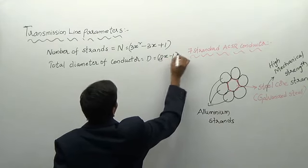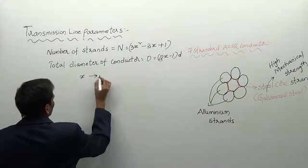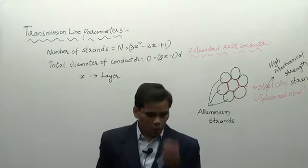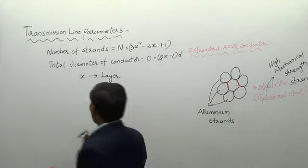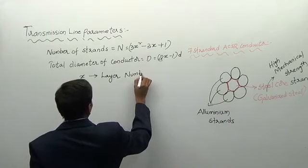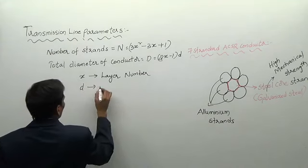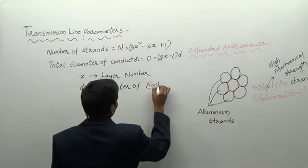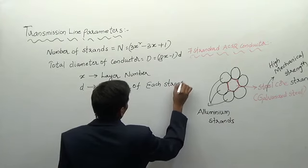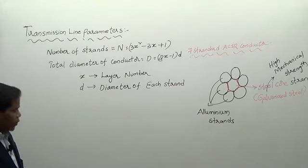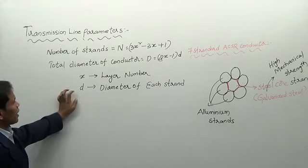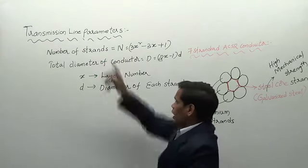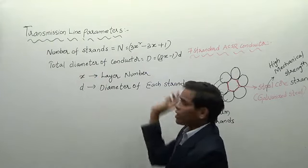The total diameter of the conductor D is given by: D = (2x − 1) × d, where x is the layer number and d is the diameter of each strand. So if we know the layer number and diameter of each strand, we can directly find the number of strands in the ACSR conductor and also the total diameter of the conductor.